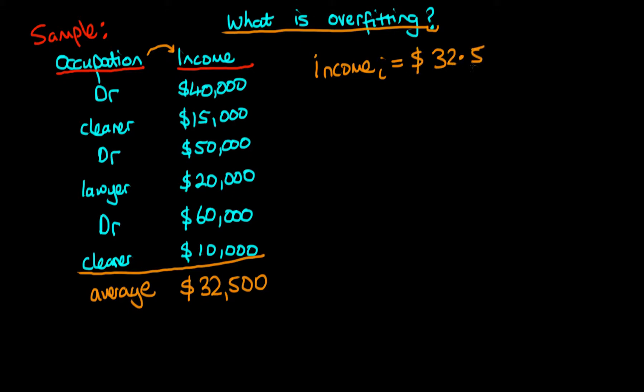The really simple model would say an individual's income is equal to the average, so $32,500. I'm just going to omit the trailing zeros here under the understanding that we're actually dealing in thousands of dollars. So the simplest model might just predict income is $32,500 per year, the average, so we completely disregard what their occupation is.